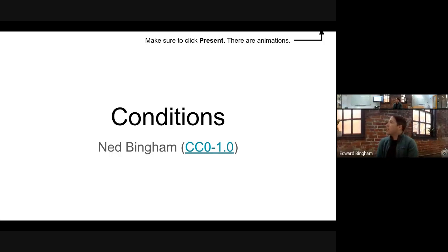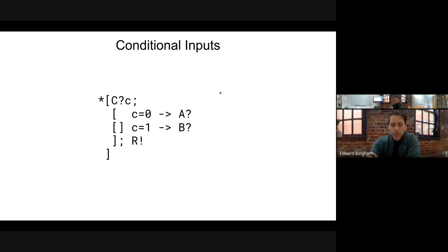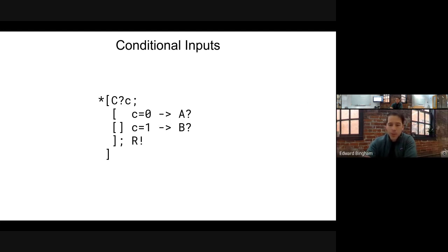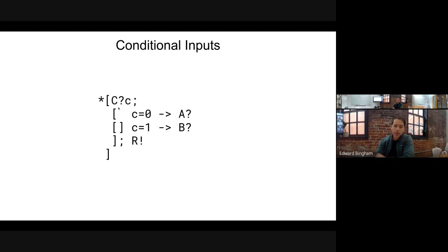We will be covering conditional logic — in particular, conditionally acknowledging tokens on input channels or conditionally emitting tokens on output channels. For the first problem statement, acknowledging tokens on input channels conditionally: channel C represents whether we read on A or B. If C is zero we read on A, if C is one we read on B, and then we emit the result on R.